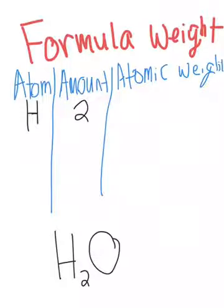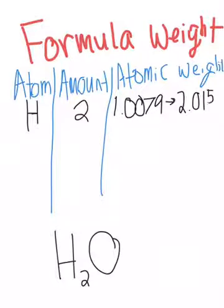The atomic weight of hydrogen is 1.0079. We have to multiply this by 2, because there are two hydrogen atoms, and we get 2.0158.